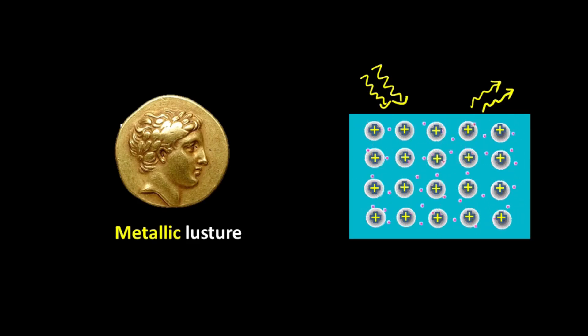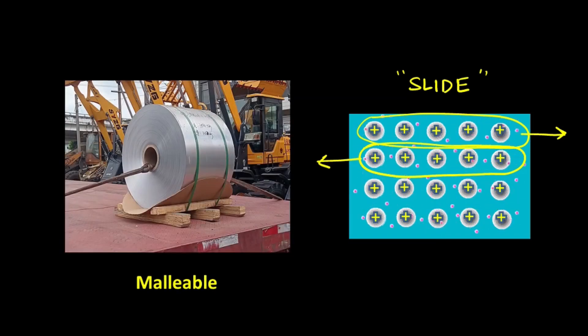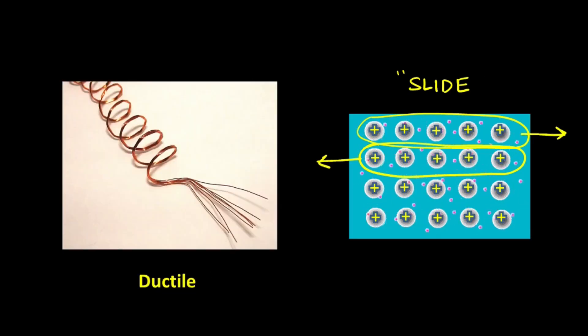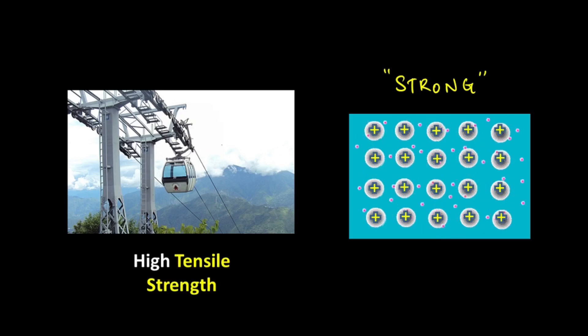The metal atoms can also slide under the influence of an external force so we can actually beat them into thin sheets, they are malleable, and they can also be drawn into thin wires, that is they're ductile. Now the metallic bonding in d-block is exceptionally strong. So these metals have high tensile strength. That is they can be used to make wires that can carry really heavy loads.